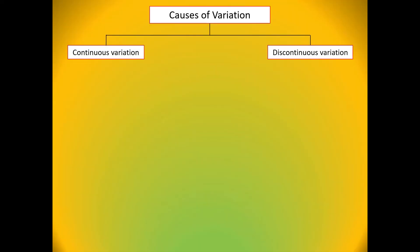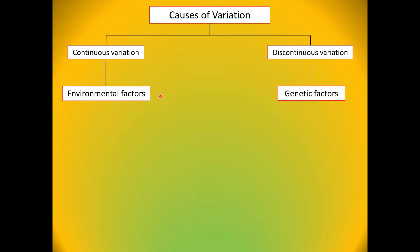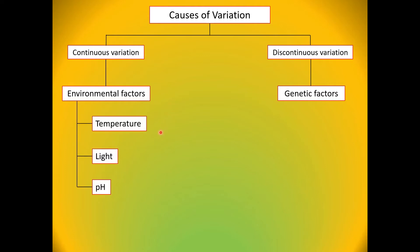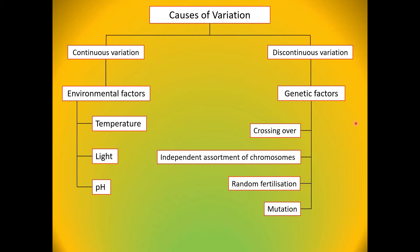Causes of variations. The characteristics of continuous variations are influenced by environmental factor, whereas characteristics of discontinuous variations are influenced by genetic factor. Environmental factors that cause variation include temperature, light, and pH. Genetic factors include crossing over, independent assortments of chromosomes, random fertilizations, and mutations.